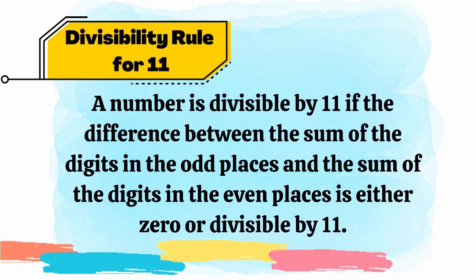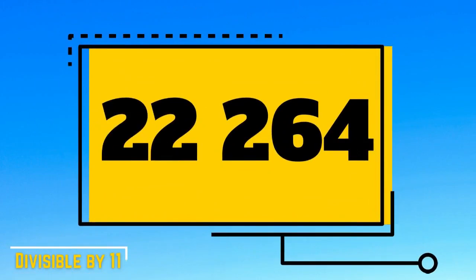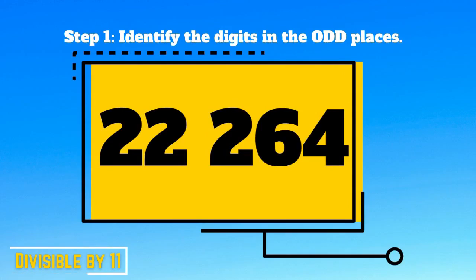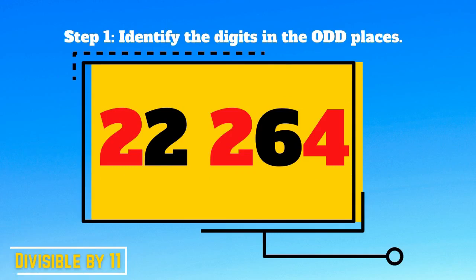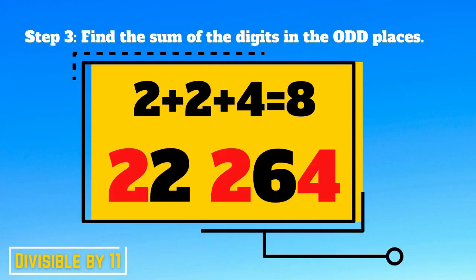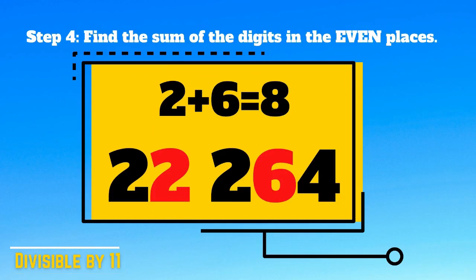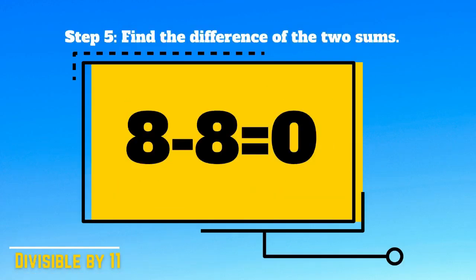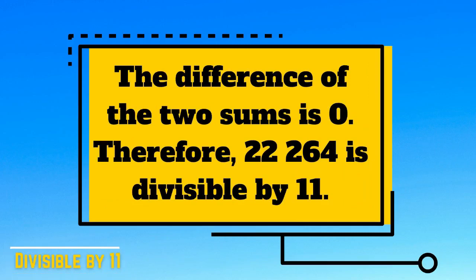For example, 22,264. Is 22,264 divisible by 11? First, let's separate the digits in odd places — these are 4, 2, and 2. Second, let's identify the digits in the even places — these are 6 and 2. Third, let's find the sum of the digits in odd places: 2 plus 2 plus 4 is equal to 8. Fourth, let's find the sum of the digits in even places: 2 plus 6 is equal to 8. Last step, let's find the difference of the two sums: 8 minus 8 is equal to 0. The difference of the two sums is 0. Therefore, 22,264 is divisible by 11.